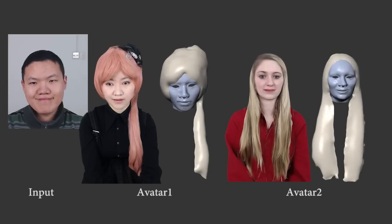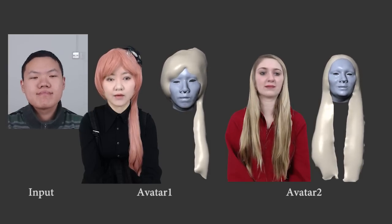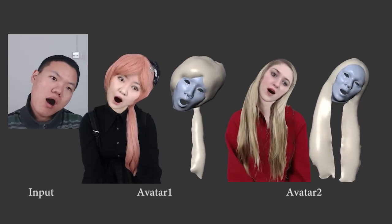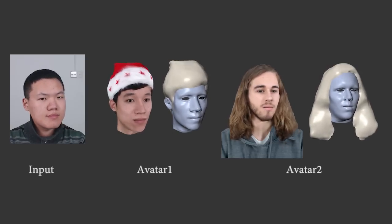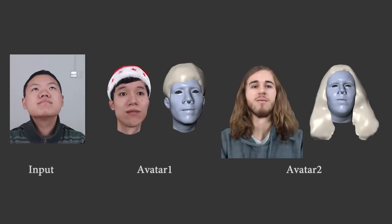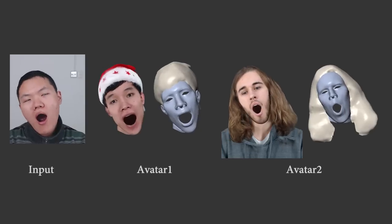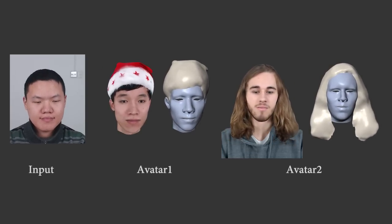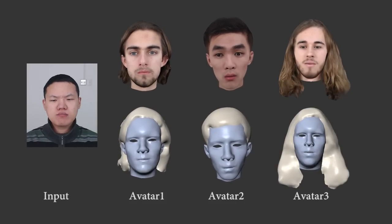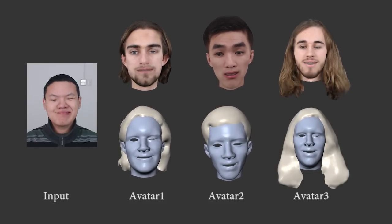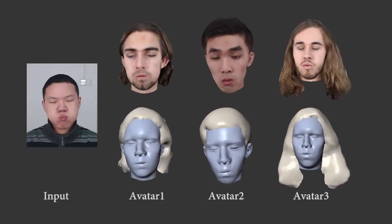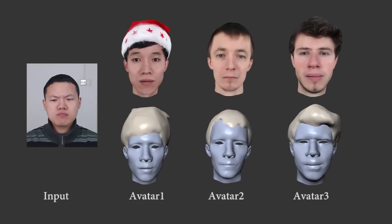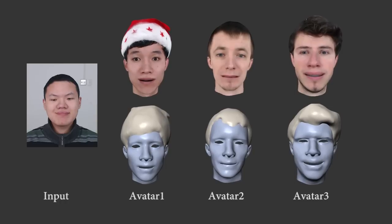Now we show more results. We can generate non-rigid deformations of long hair using our hair morphable model. Our method can robustly handle large head rotations. Our image-based representation intrinsically encodes fine-scale details such as wrinkles. Our technique can also handle hair along with headwear, which is not supported in previous work on personalized dynamic avatars.